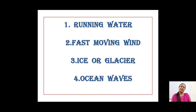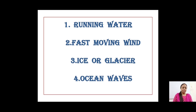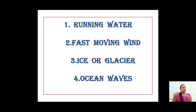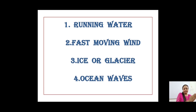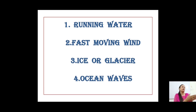The first agent is running water — the best example being a river. Rivers come down from highland to lowland, and the force of the water leads to the breaking of rock, which is weathering. Those broken rocks are then carried away, which is erosion.